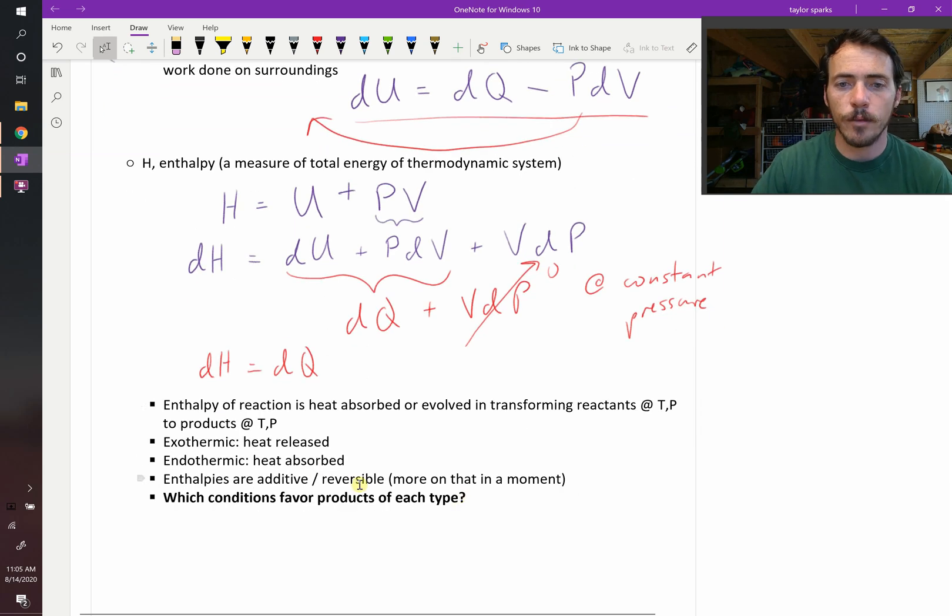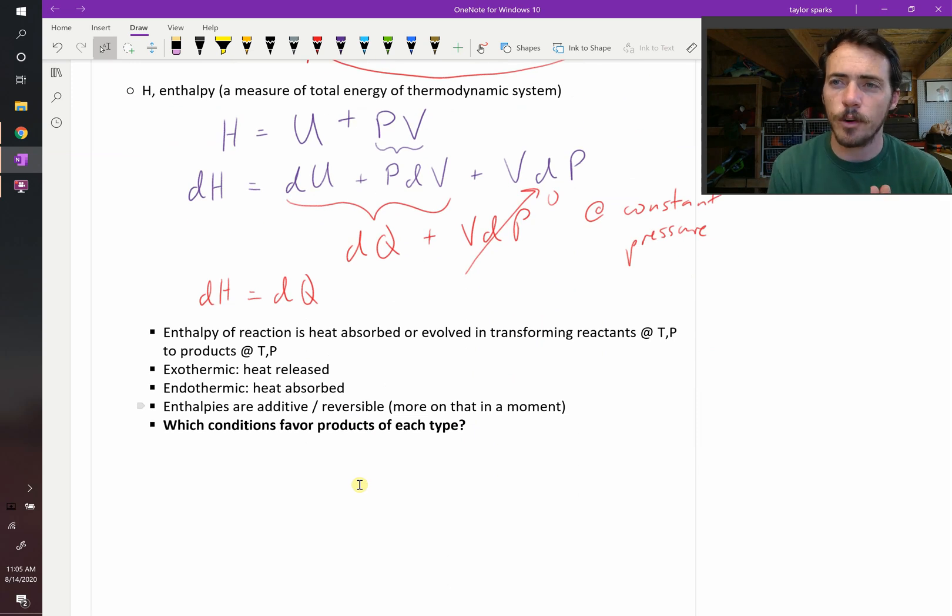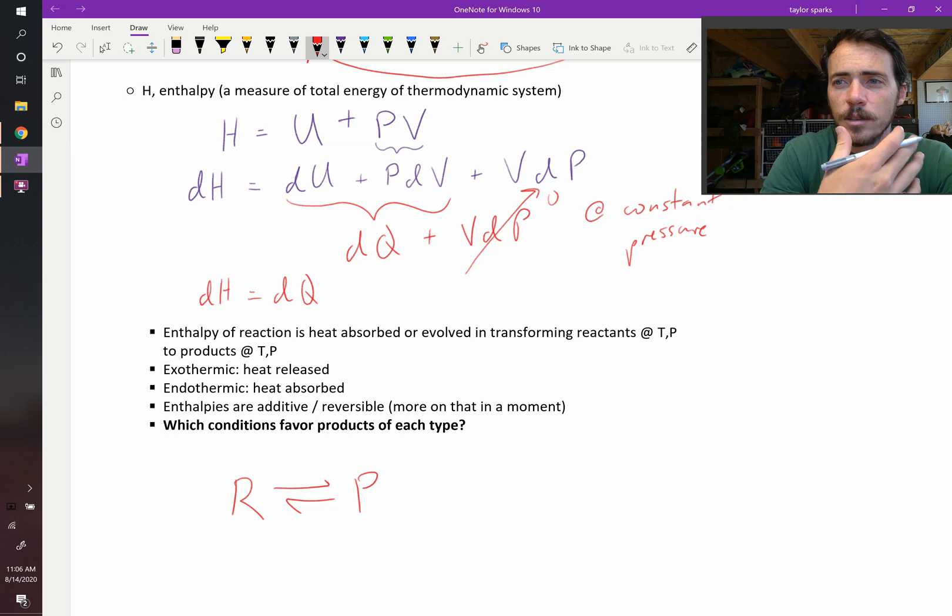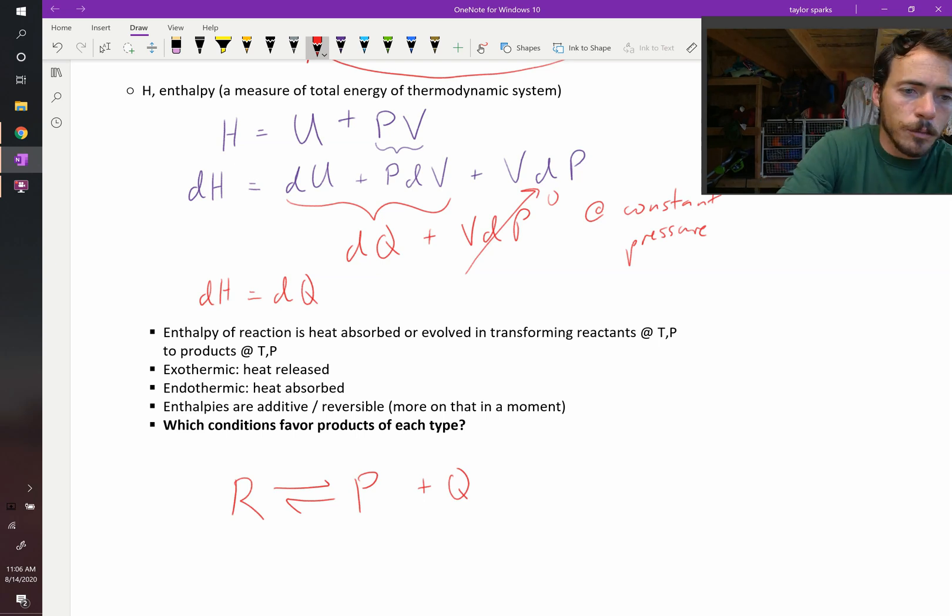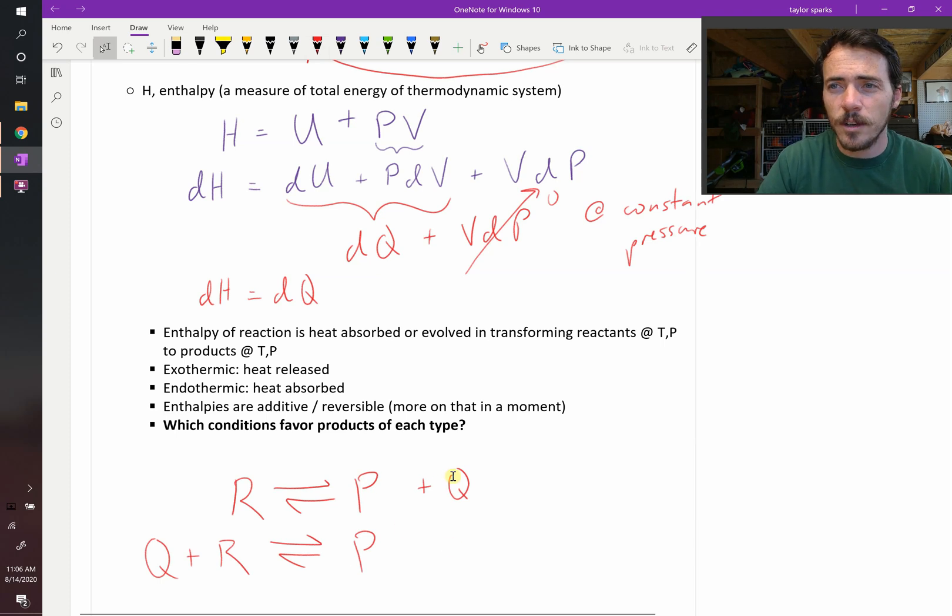Now these enthalpies are additive and reversible. We'll talk more about that later. But really quickly, what should favor what type of reaction? Endothermic and exothermic. What should favor an exothermic reaction taking place? Well, think about it. You've got reactants turning into products. We know these are reversible. And if it's exothermic, then it's giving off heat, basically, plus you've got heat being produced over here. But if it's endothermic, then you've got heat plus your reactants producing products. So if you're in a furnace where it's really, really hot, which one of these is going to be favorable? Well, in a furnace, you've already got lots of heat there. So giving off more heat is maybe less favorable. But if your reaction needs heat, throwing it in a furnace is going to make it favorable and vice versa. So that's enthalpy, the first part of what we need to know for thermodynamics.